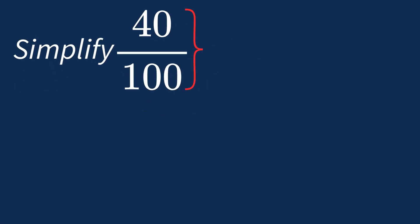To simplify 40 over 100, we need to look for the common factors between the top number, the numerator, and the bottom number, the denominator.